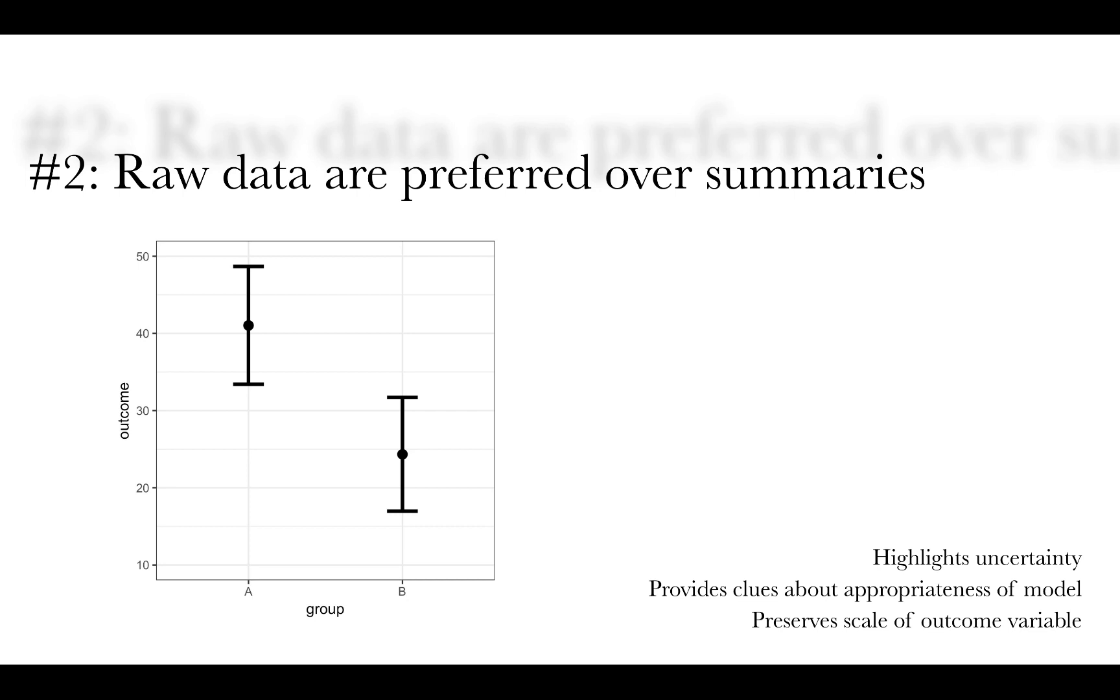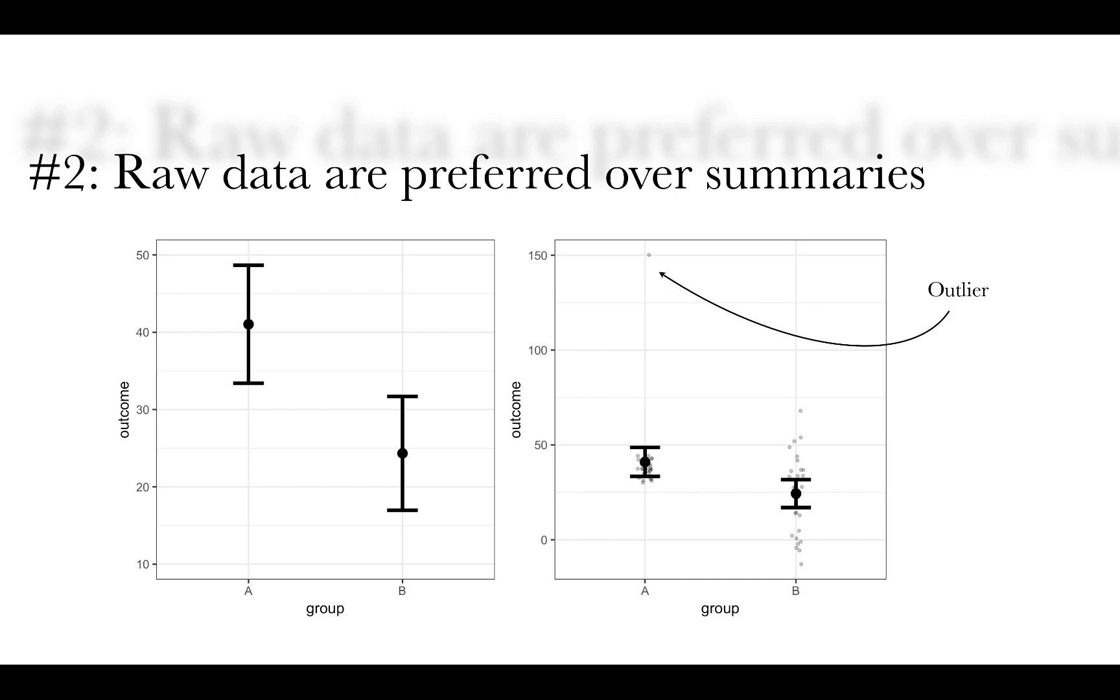So that was the first heuristic. The second is that raw data are preferred over summaries. And the reason why we prefer raw data is because they highlight uncertainty, they provide clues about whether our model is appropriate or not, and they preserve the scale of the outcome variable. So on the left here, we have a graphic that looks fine, it looks believable, and yet once we overlay the raw data, we see that the only reason group A has a higher mean than group B is because of that one outlier. Otherwise, there's a whole lot of overlap going on. There's really no differences between the two groups.